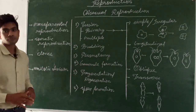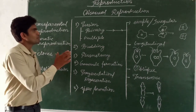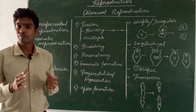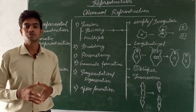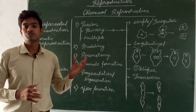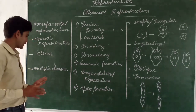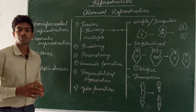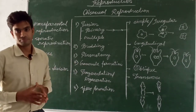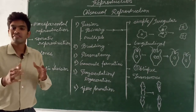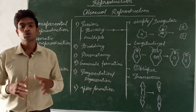One more thing to keep in mind is that in asexual reproduction, mitotic cell division takes place. Amitotic cell division is a kind of cell division which takes place in unicellular organisms and is a simpler kind of cell division. A separate video will be made for the types of cell division.